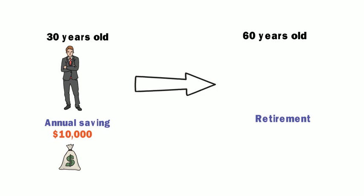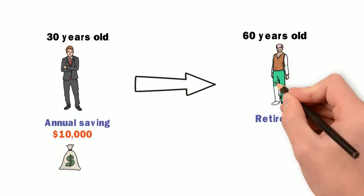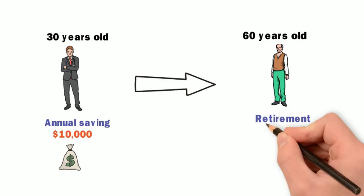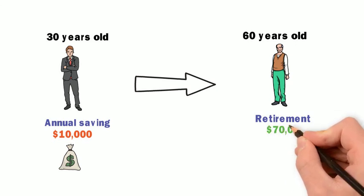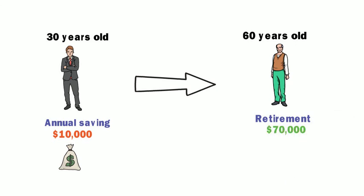Well, that $10,000 would grow into about $70,000 in today's terms. That means Rob will be able to purchase seven times more goods and services with the same amount of money 30 years later.